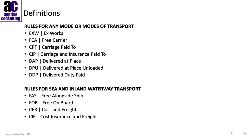These are the definitions. Rules for any mode or modes of transportation: Ex Works, Free Carrier, Carriage Paid To, Carriage and Insurance Paid To, Delivered at Place, Delivered at Place Unloaded, and Delivered Duty Paid. Then the four sea and waterway terms: Free Alongside Ship, Free on Board, Cost and Freight, and Cost Insurance and Freight.